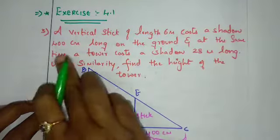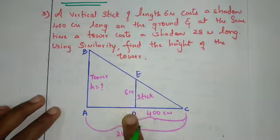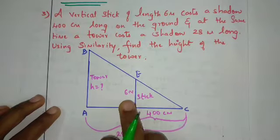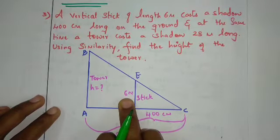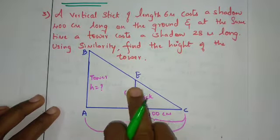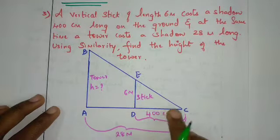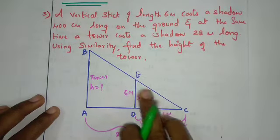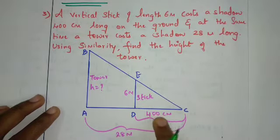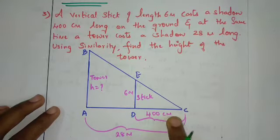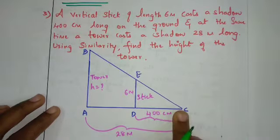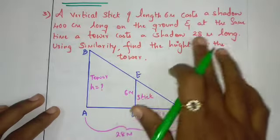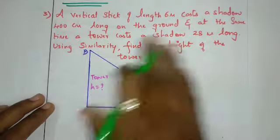So one vertical stick of length 6 meters casts a shadow. This shadow is on the ground. This distance is 400 cm, so 400 cm is cast as a shadow.